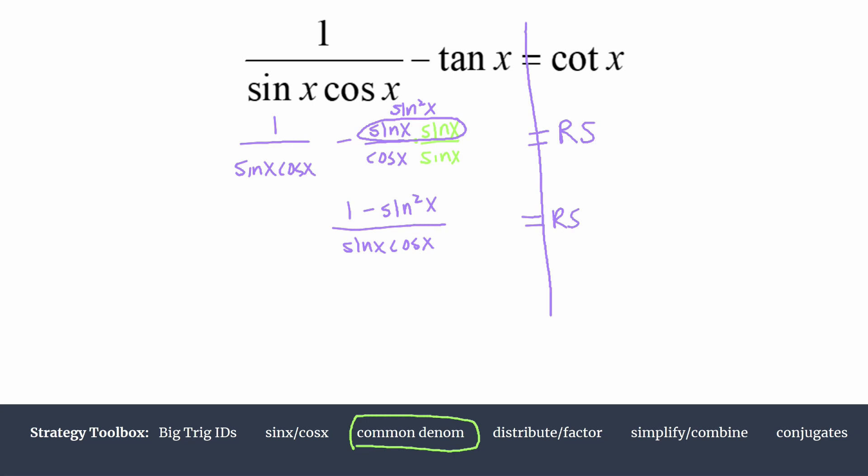Now we want to step back and evaluate. How are we going to get from this single term to cotangent? Notice in the numerator we have something that should remind you of a Pythagorean identity: this 1 minus sine squared.